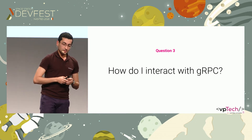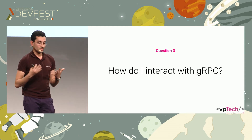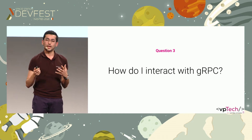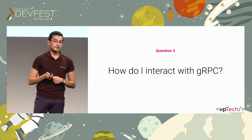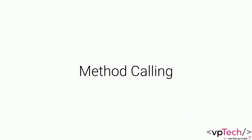In gRPC we have something like RPC, so it is based on method calling. Basically what you do is just call a method — a method like the ones you will have locally, with parameters, return types, and so on. That's it, easy — method calling.